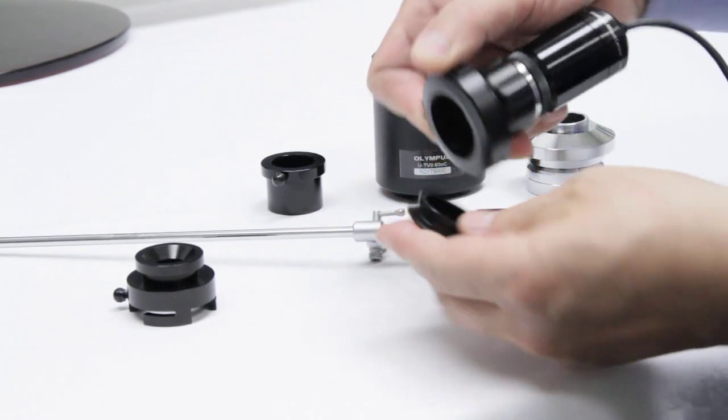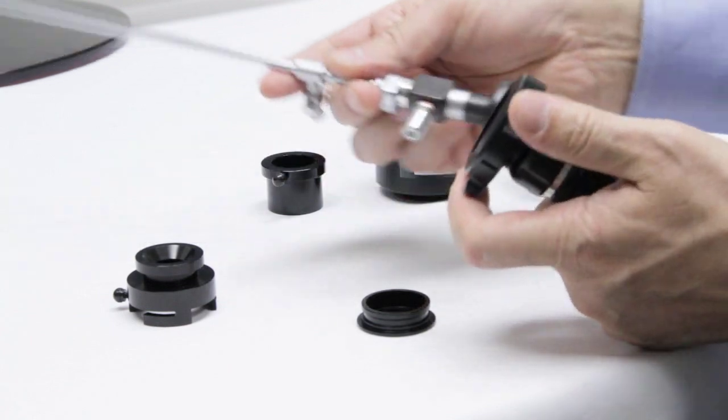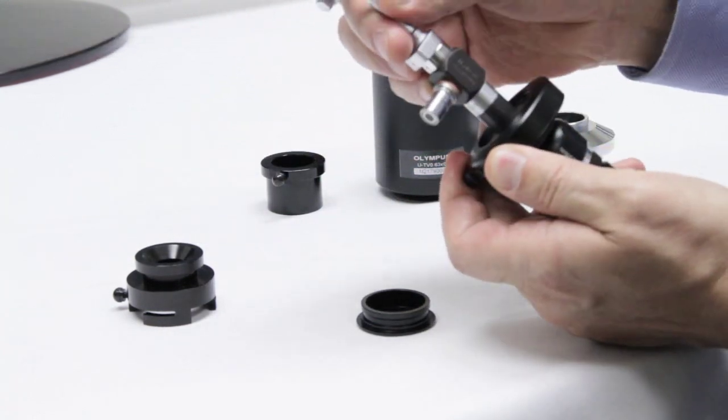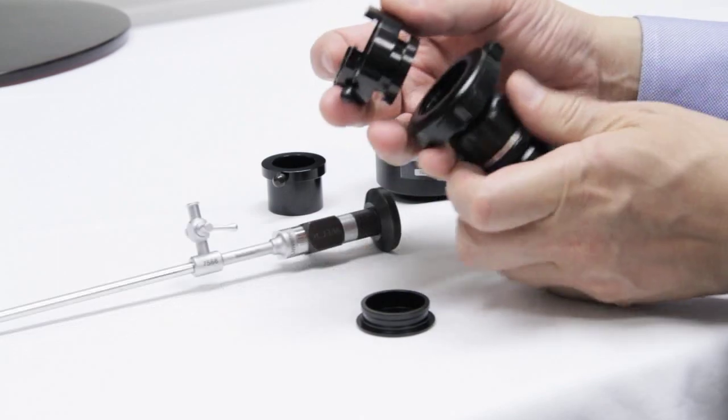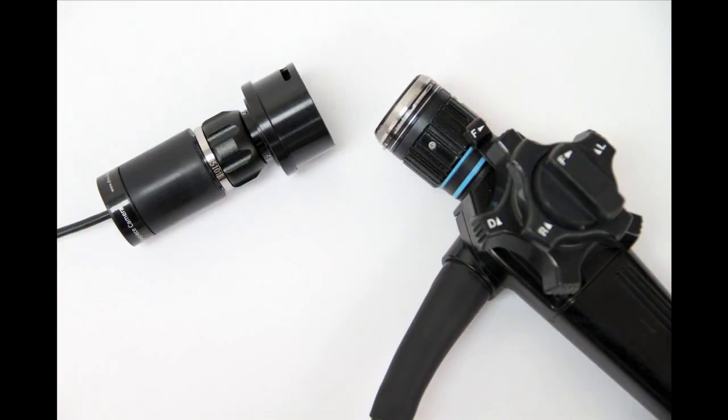So we will release the cover from the adapter and connect the rigid scope in place. If you need a flexible scope, there is a different Olympus or Pentax adapter for that.